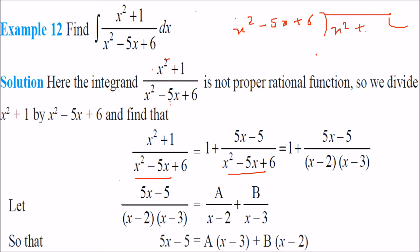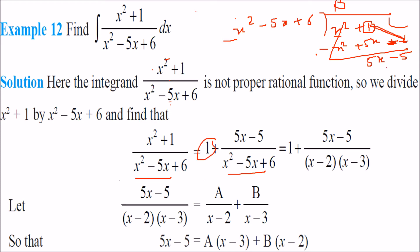To see how this division works: dividing x²−5x+6 into x²+1 — to get x² we multiply by 1, giving x²−5x+6. Changing the sign and subtracting: x²+1 minus (x²−5x+6) leaves 5x−5. So the result is 1 + (5x−5)/(x²−5x+6).